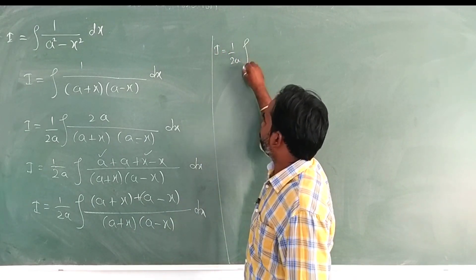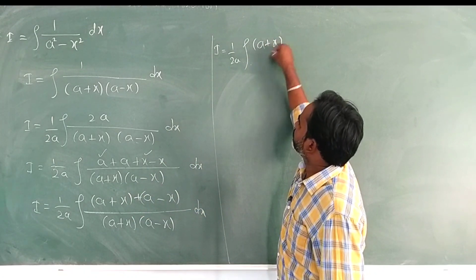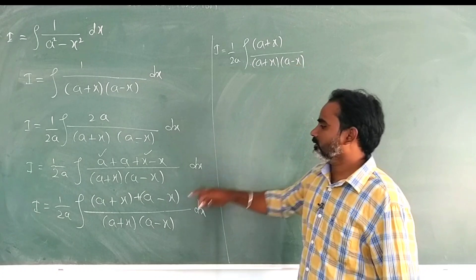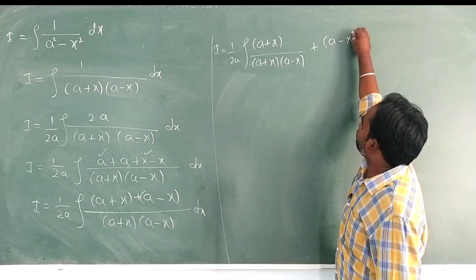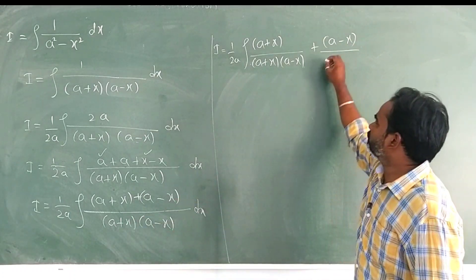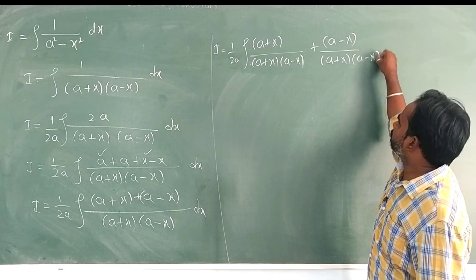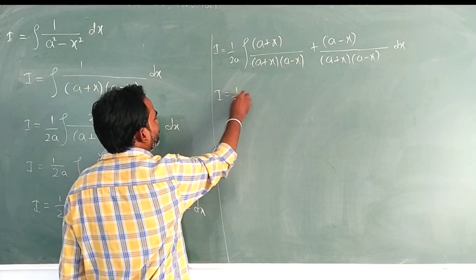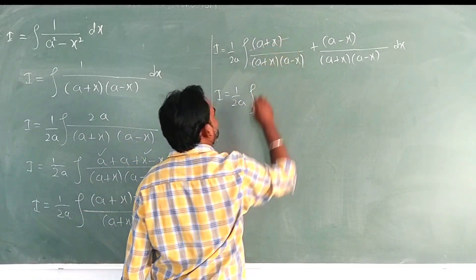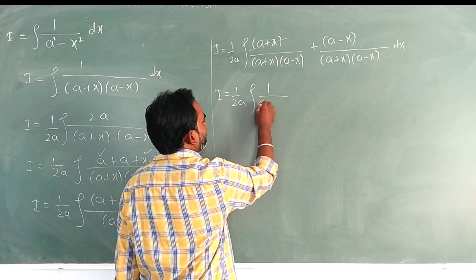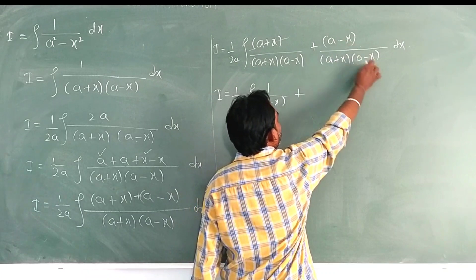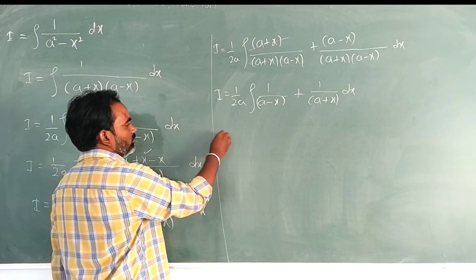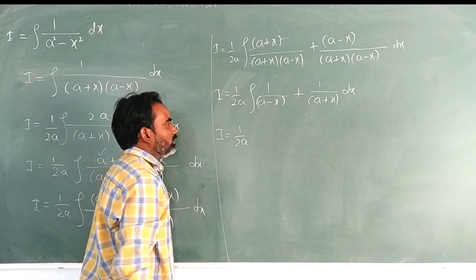Now split: I equals 1 divided by 2a, integration. In the denominator we split it as (a+x)(a-x). We can cancel a plus x with a plus x easily. So we get 1 divided by (a minus x) plus 1 divided by (a plus x), all times dx.